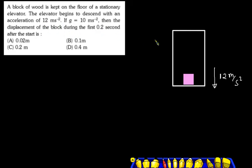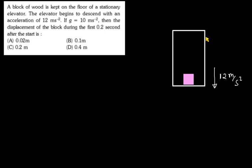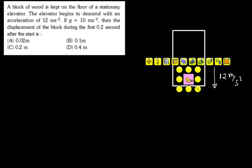This is basically what is happening: the displacement of the block during the first 0.2 seconds. The lift acceleration is in the downward direction — it is 12 m per second square, which is more than g. So the situation will be like this: how much is the maximum acceleration of this block? It is 10 m per second square.